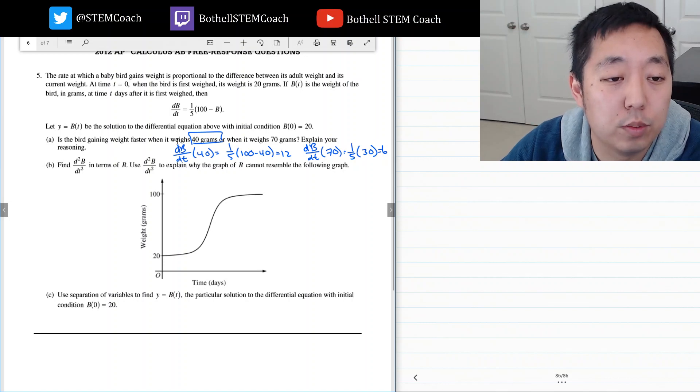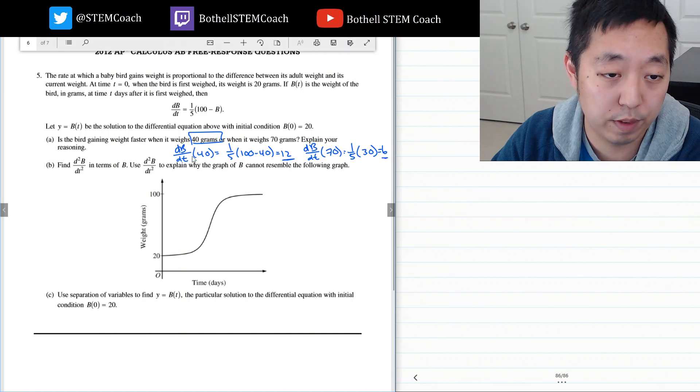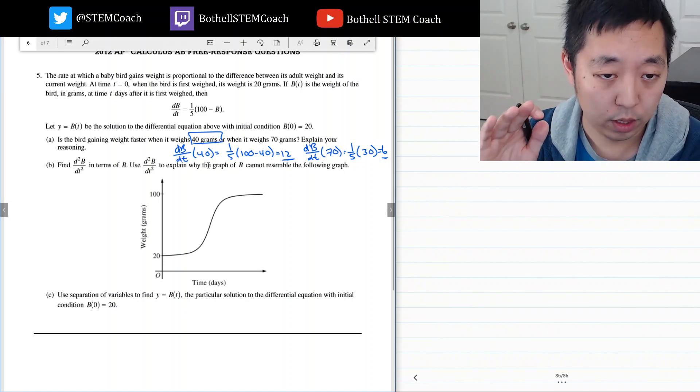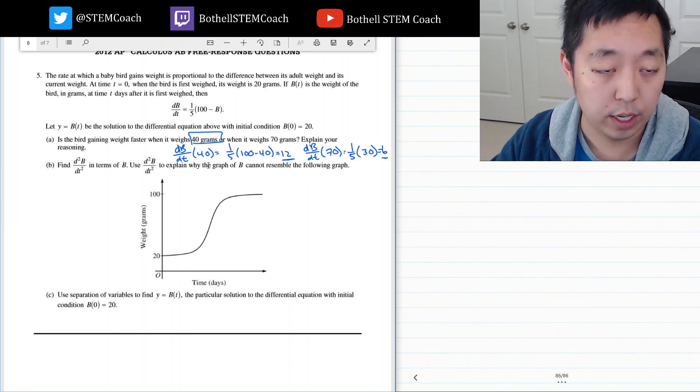And so when it weighs 40 grams is when it's gaining weight faster because the derivative 12 is bigger than 6. So the derivative at 40, which is the rate at which it's gaining weight, is greater than at 70.